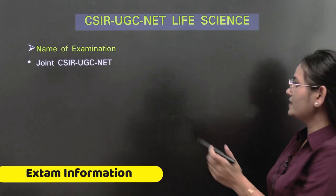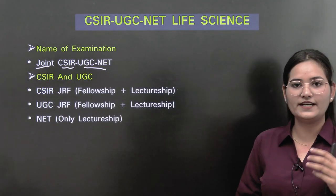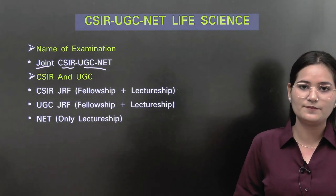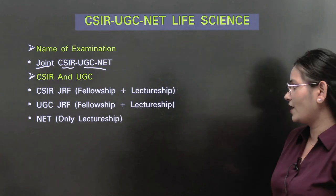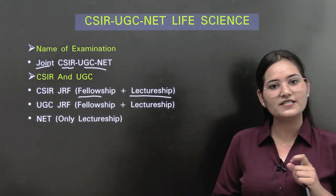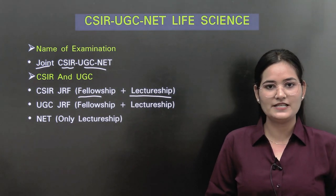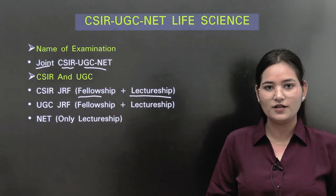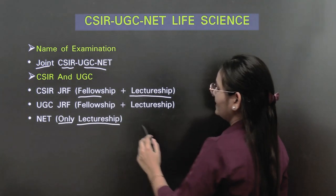The complete name of the examination is Joint CSIR UGC NET. It is divided into three categories. First is CSIR JRF — if you qualify in this category and pursue a PhD from any institute or university in India, you are eligible for fellowship plus lectureship. Second is UGC JRF — again eligible for fellowship plus lectureship. Third is NET only — eligible only for lectureship, no fellowship facility.